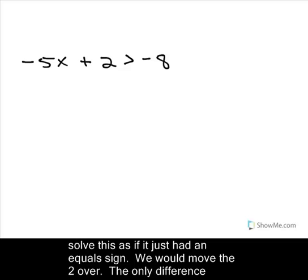And if it had an equal sign, what you would do is you would first move the 2 over. So you would have minus 5x greater than negative 8 minus 2 is negative 10.